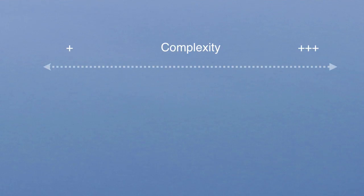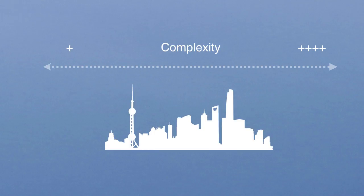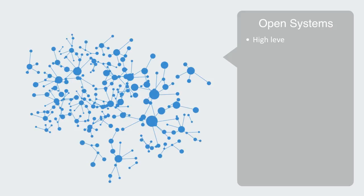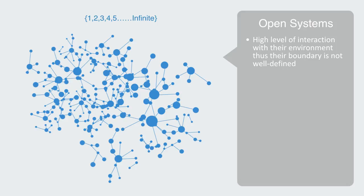Complex engineered systems are qualitatively different from these linear technologies. To help illustrate this, we will take the classical example of a city. Firstly, complex engineered systems are open systems, meaning they have such a high level of interaction with their environment that their boundary is not well-defined. Added to this, they are composed of very many elements — we may be talking about millions, billions, or even too many components to quantify in any meaningful way. It may be very difficult to say which components are part of the system and which are not.